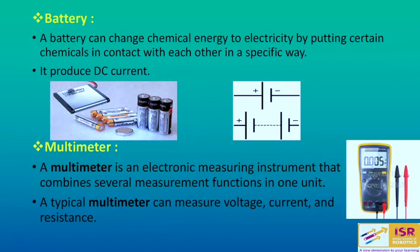Next is battery. Battery is a device that is used to give power to a circuit. It is responsible for converting chemical energy into electrical energy and is used to produce DC current. We also have a commonly used electronic measuring instrument known as a multimeter. A multimeter combines several measurement functions in one unit — you can measure voltage, current, and resistance with just a multimeter, so you don't need separate instruments.